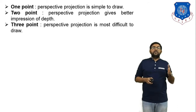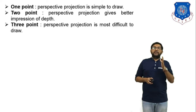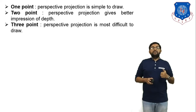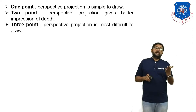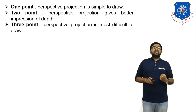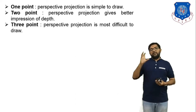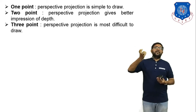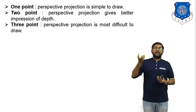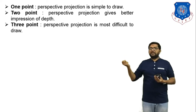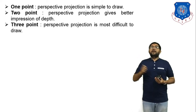One-point perspective projection is simple to draw — you just draw the area of the object. Two-point perspective projection gives a better impression of depth; once you consider two points you can understand the depth of the object. Three-point perspective projection is the most difficult to draw and is used for complicated objects that cannot be projected about one or two points.